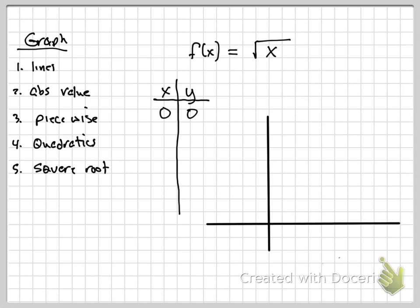I could put in a one — what's the square root of one? One. So I can plot (1, 1). I've plotted (0, 0) and (1, 1). I don't really want to plug in two or three because those give ugly irrational numbers. Can I plug in four? Yes — the square root of four is two, so I go over four, up two. What's the next one? Nine — the square root of nine is three. So my graph does this.